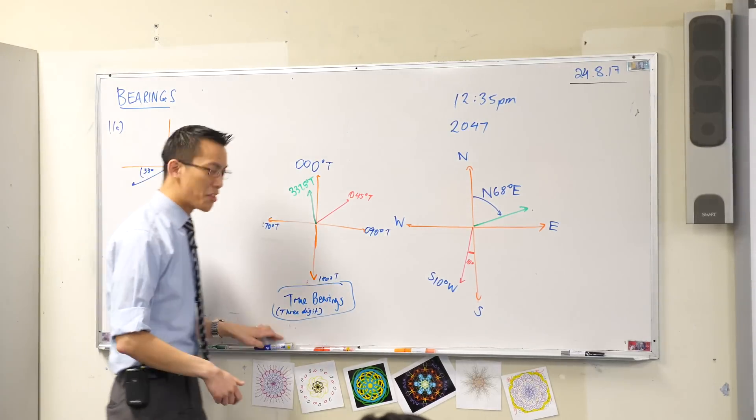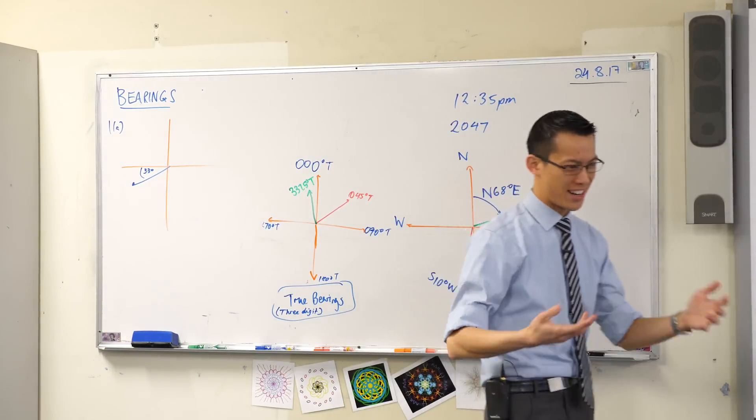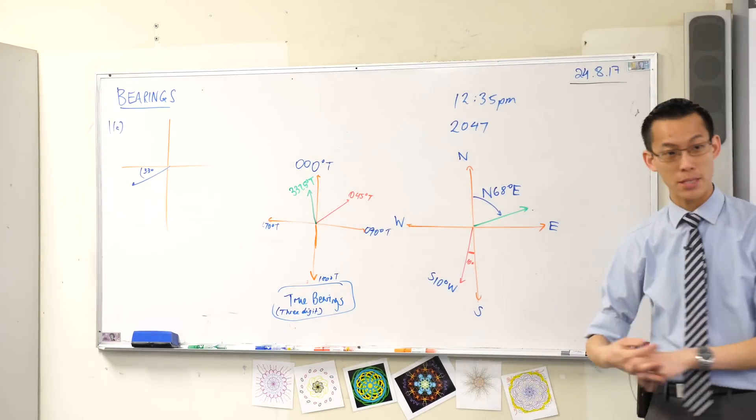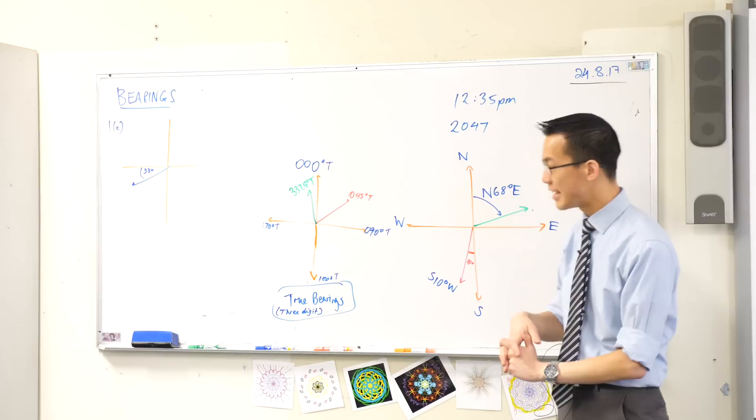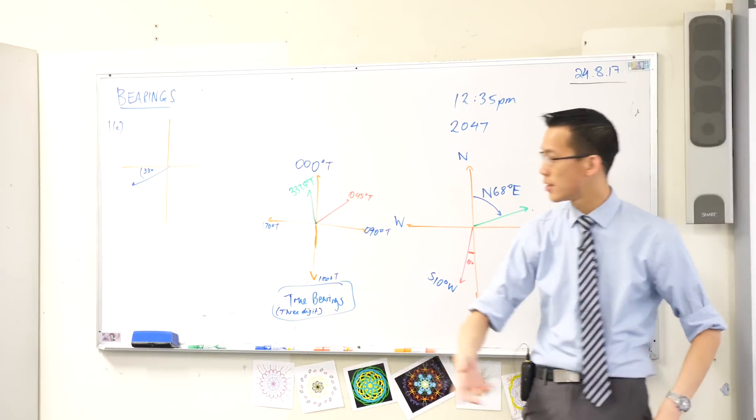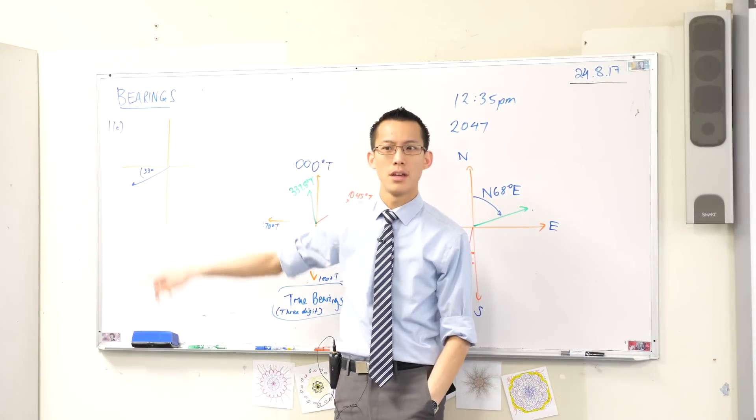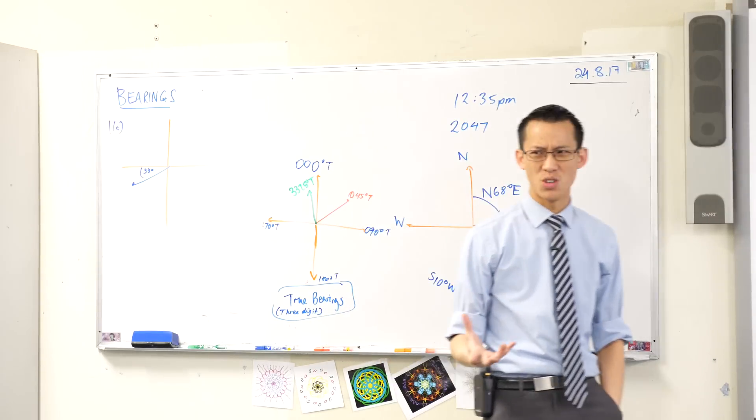So the reason I know this can't be, they can't intend me to talk about compass bearings—north, east, south, west—is because look at the size of the angle, 33. Do you see it's an awkward number? It's awkward.